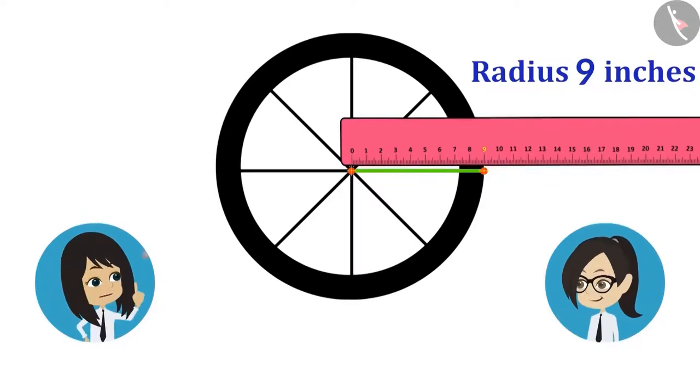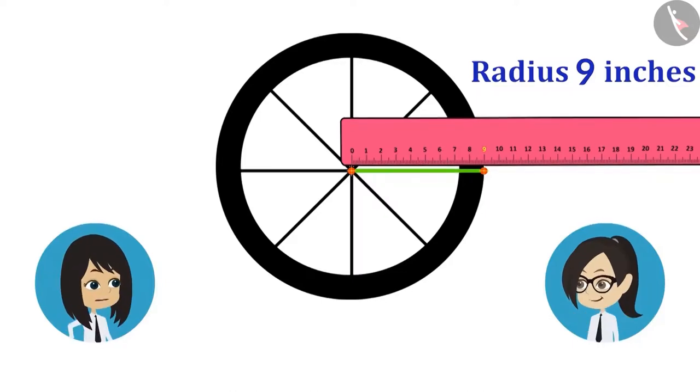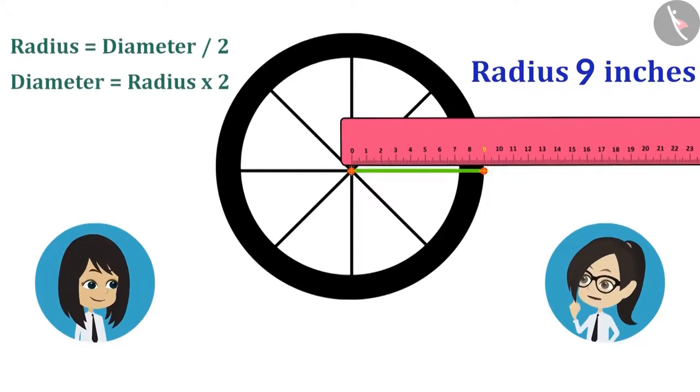Hey, why do we need to measure it? We can find it only by measuring the radius. How? Look, the radius is also called the half of diameter. This means that the diameter will be twice the radius. Got it? Oh, that means if we multiply the radius by 2, then the measure of diameter will be known.